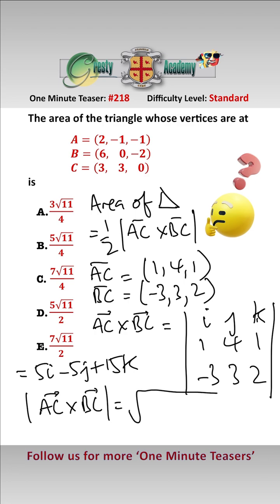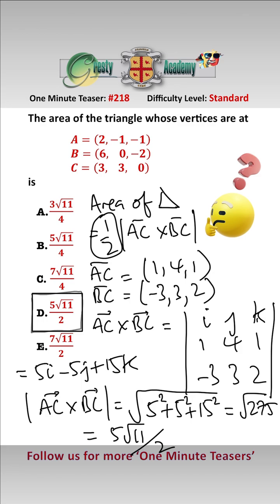Therefore, the modulus of the cross product of AC and BC is equal to the square root of 5 squared plus 5 squared plus 15 squared, which equals root 275, which equals 5 root 11. But the area is half of that modulus, so therefore it's 5 root 11 over 2, which is answer D.